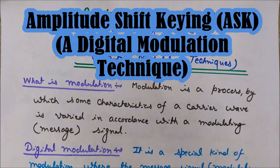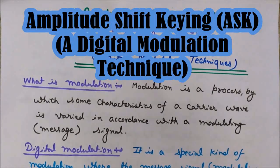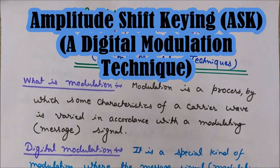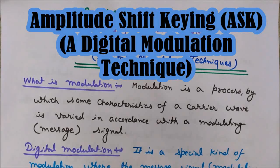In modulation, we have a high frequency carrier wave and we change either the frequency, phase, or amplitude of this carrier wave according to the instantaneous variations of the message signal. If the amplitude of the carrier wave is varied, we call it amplitude modulation. If the frequency or phase is varied, it is known as frequency or phase modulation.